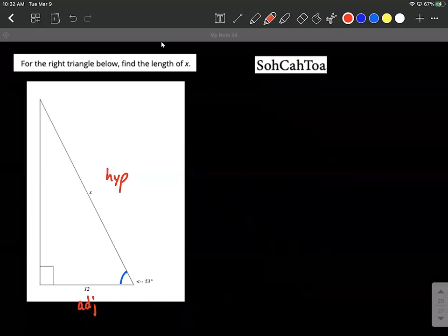So what I want to do next is look at SohCahToa. Sine is opposite over hypotenuse, cosine is adjacent over hypotenuse, and tangent is opposite over adjacent. With ours we have the adjacent and the hypotenuse that we want to get involved. So the adjacent and hypotenuse comes back to cosine.